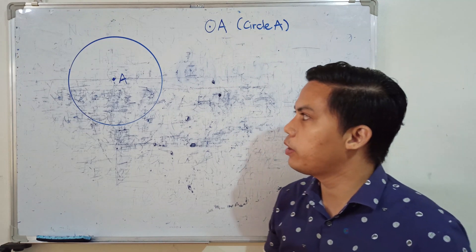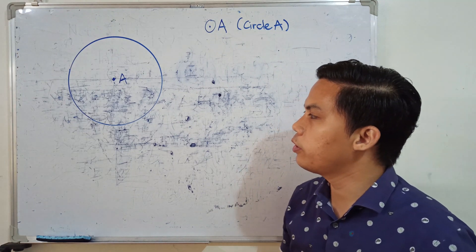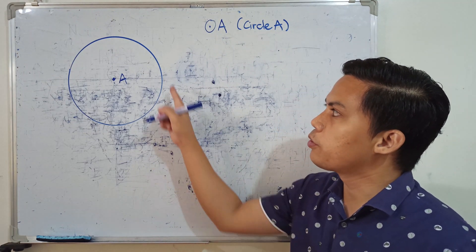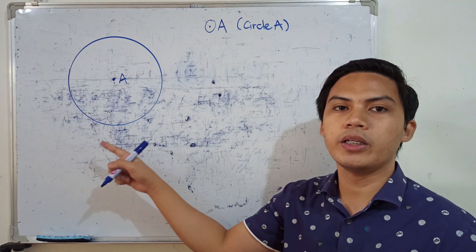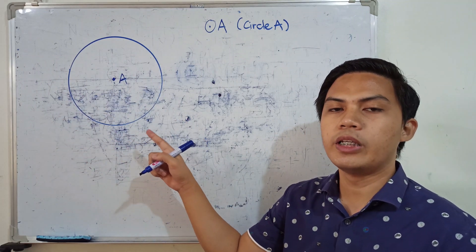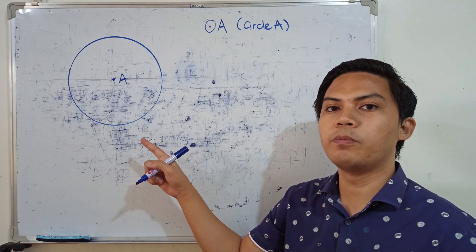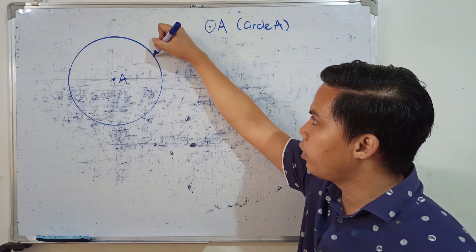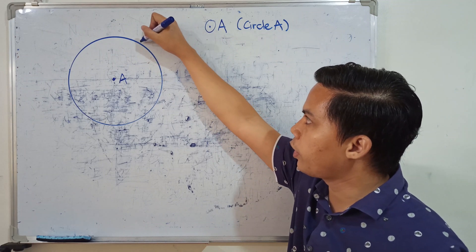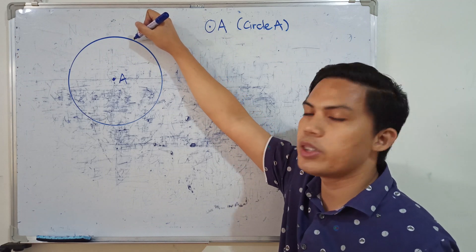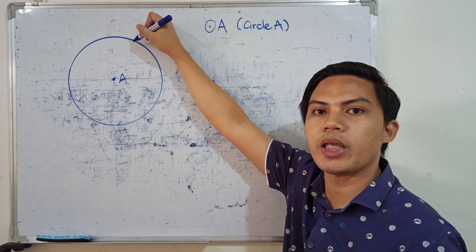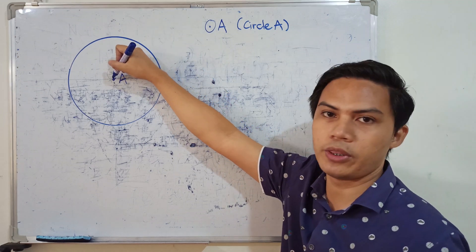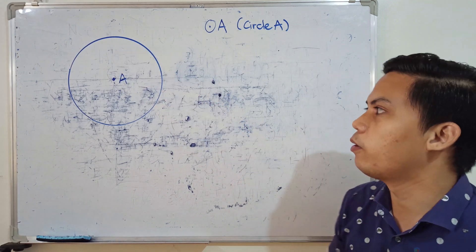Now, by definition, the circle is made up of an infinite number of points around it. Those points are equidistant from our fixed point called the center.